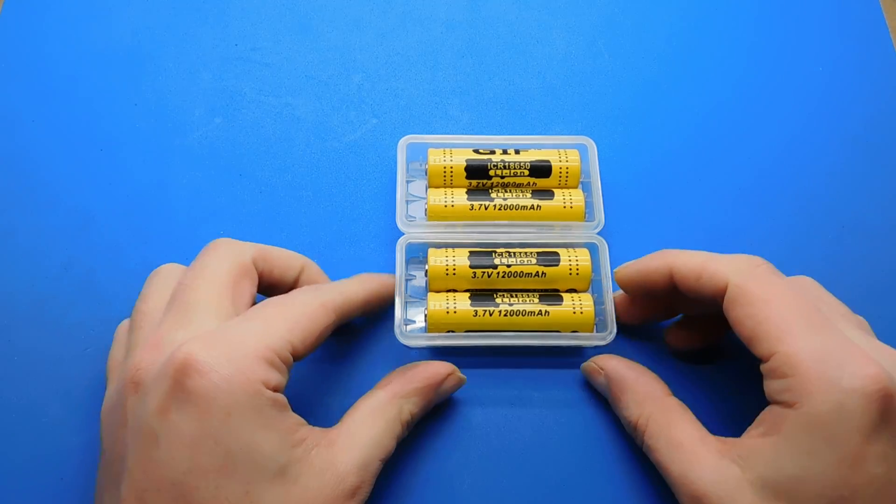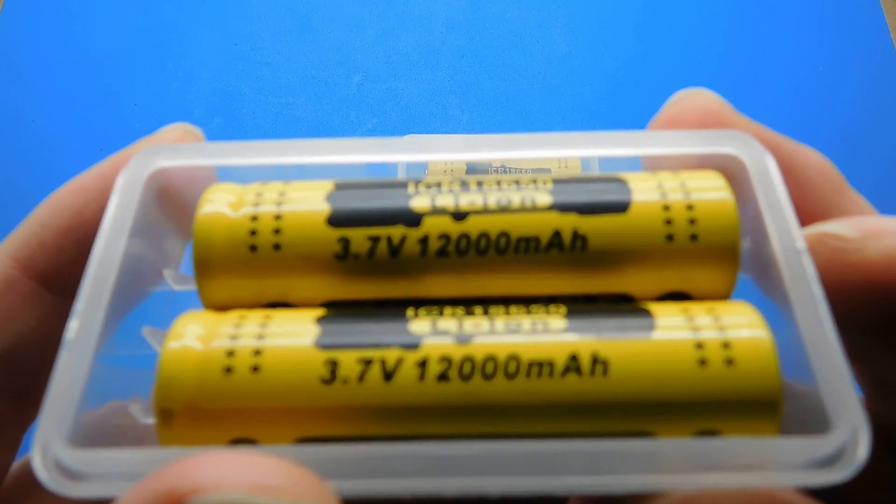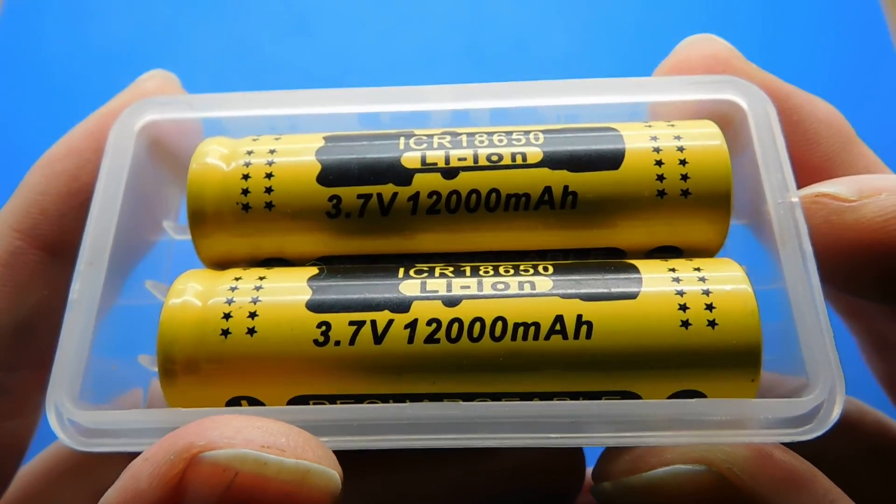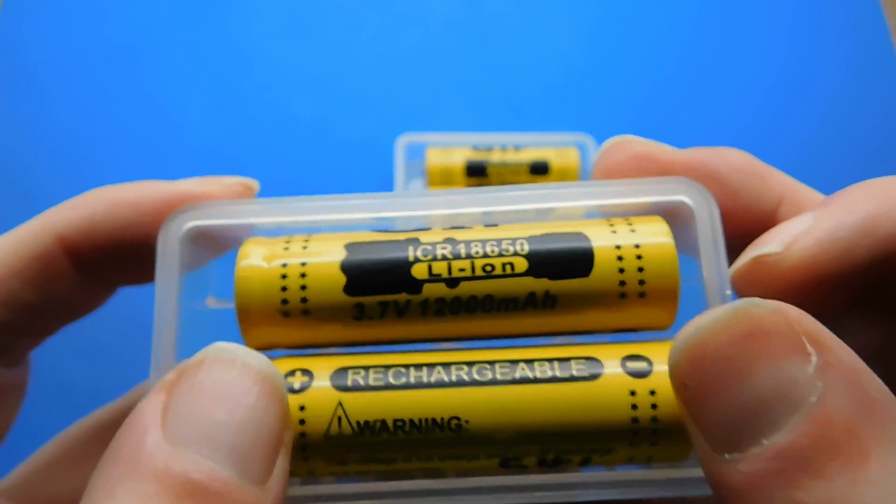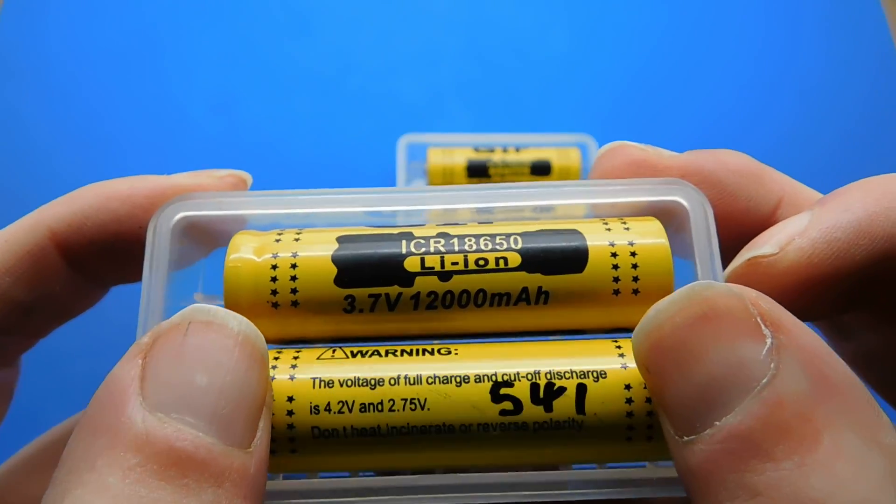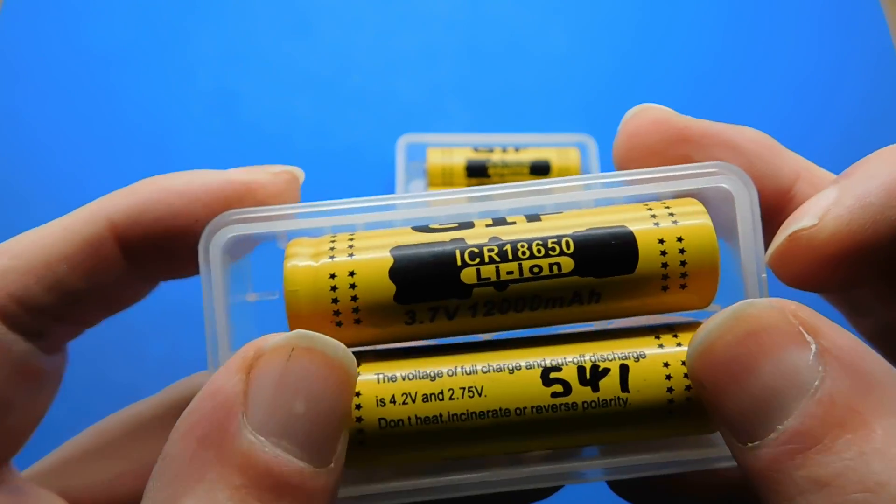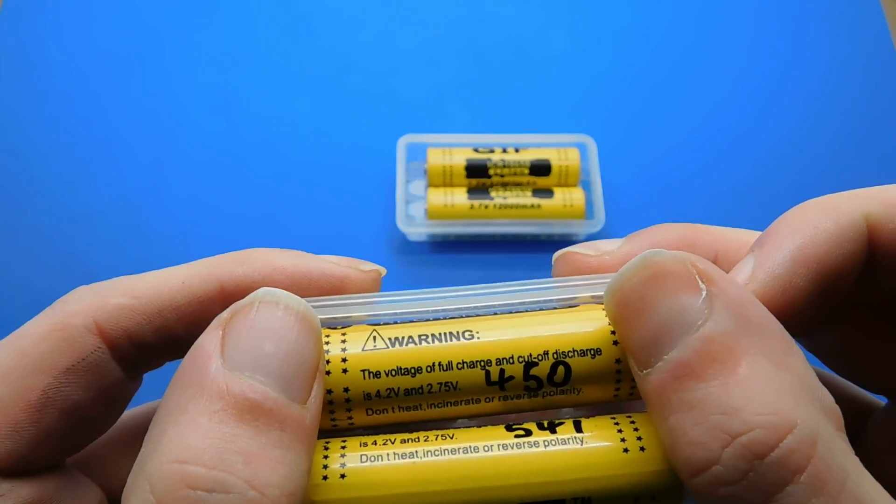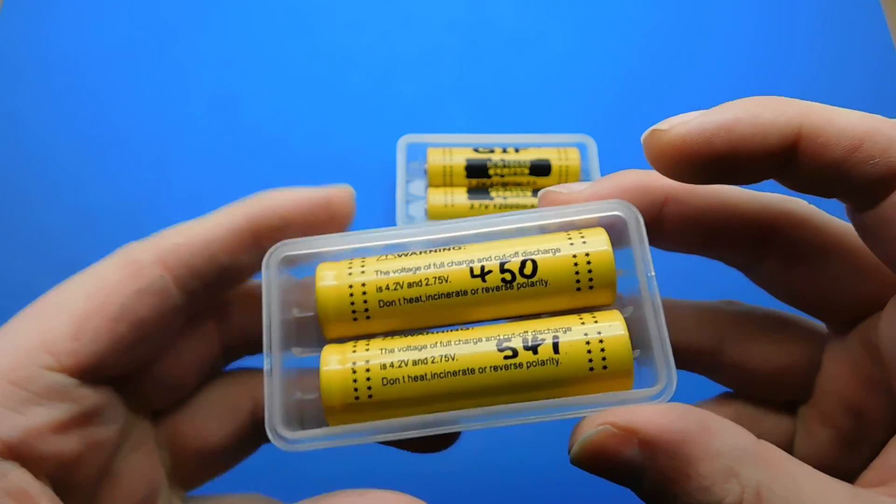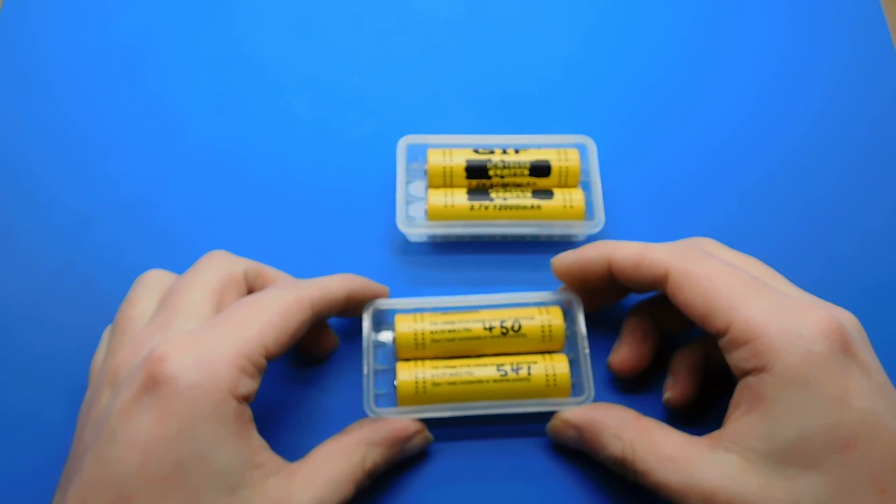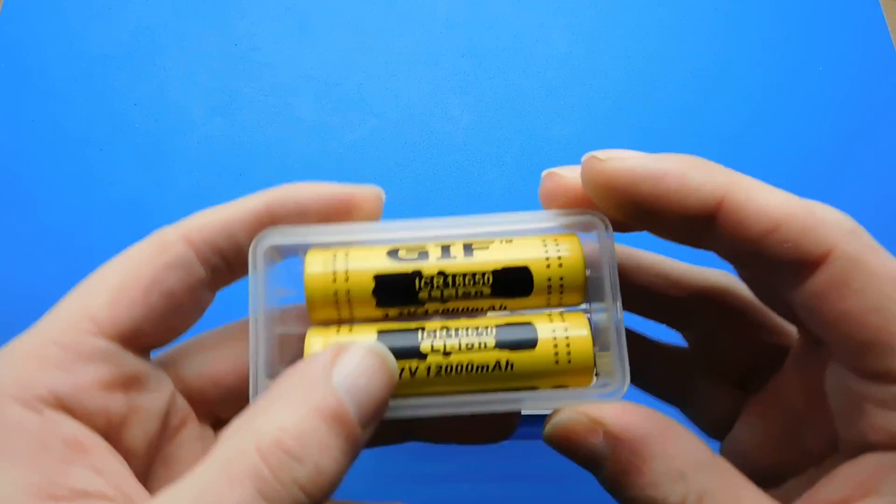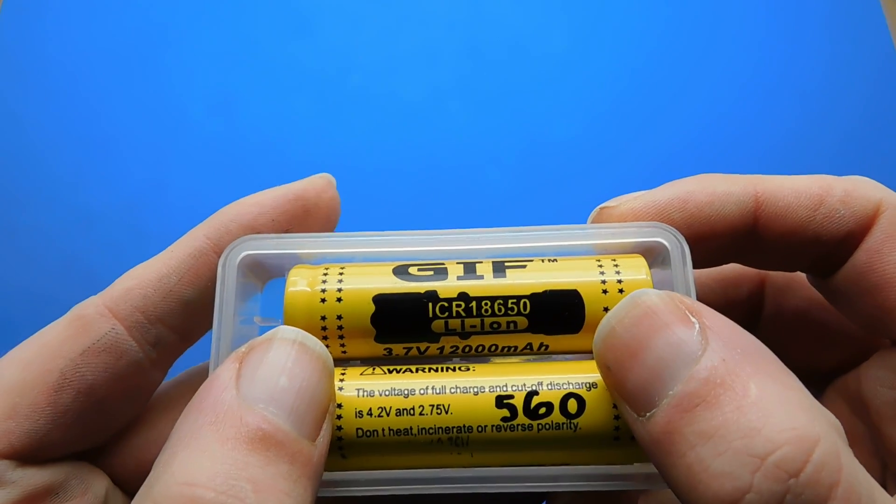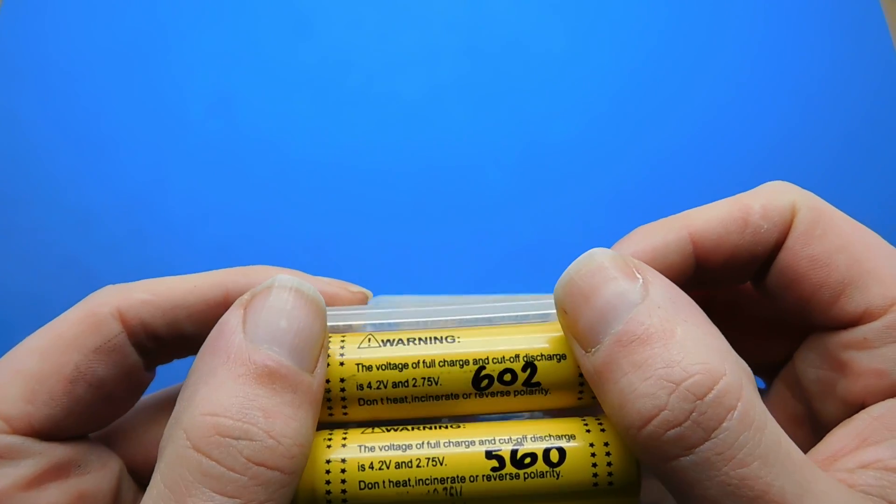So it's supposedly 12,000 milliamp hour. What it actually gave me was 541 on that one, 541 milliamp hour. And this one was 450. This one was supposedly 12,000 again, it came out as 560 and 602.